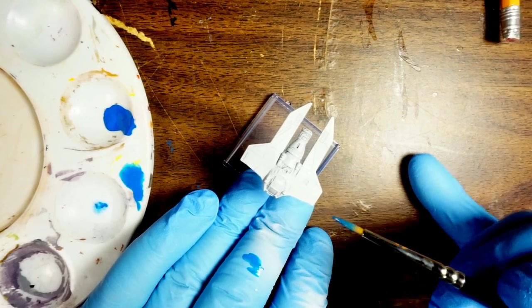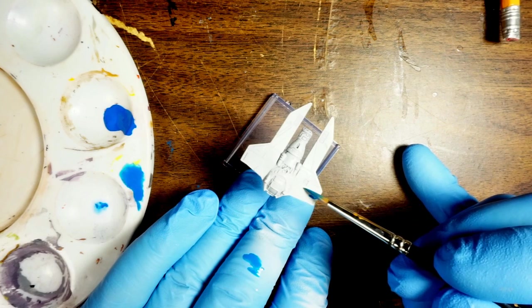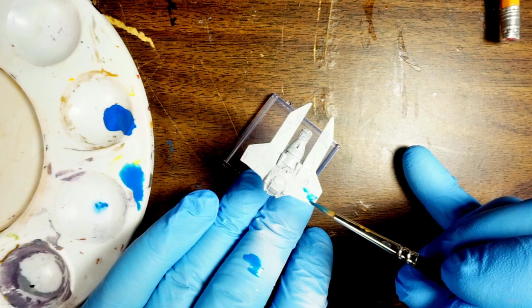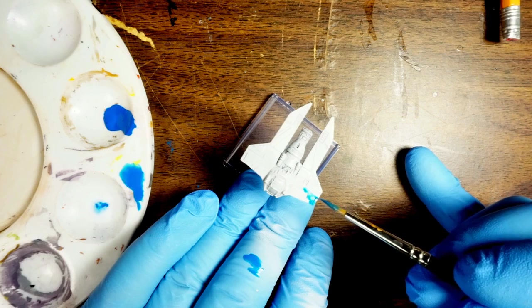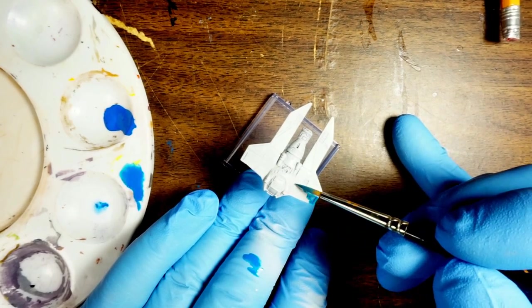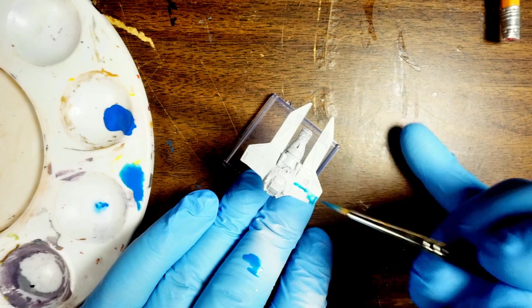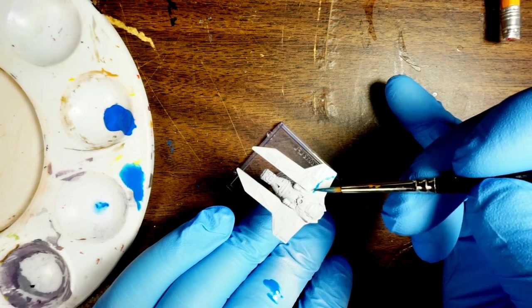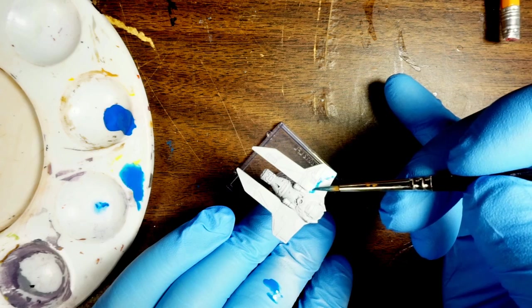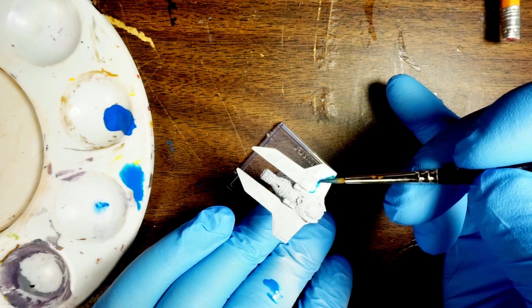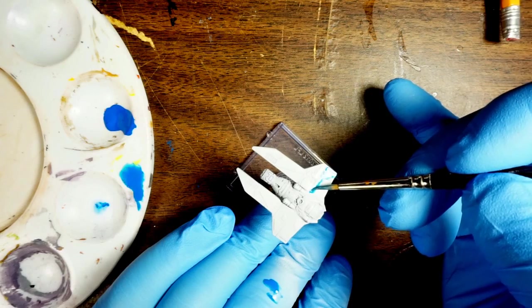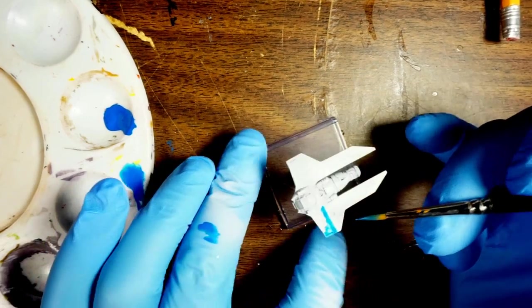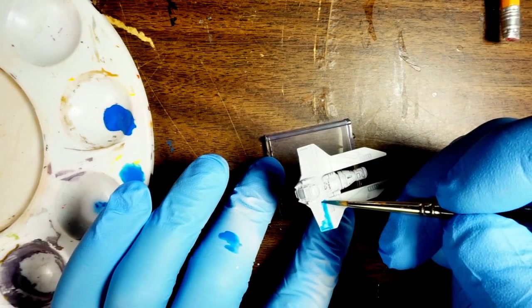Recently when I ran out of airbrush medium I decided to just thin down some matte medium that I had left over in a 50-50 mix. It seems about the same thinness as the airbrush medium with the added benefit of having a little bit of matte agent in it as well. I'm going to move in here and carefully start getting this in.